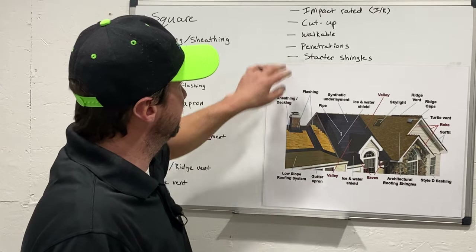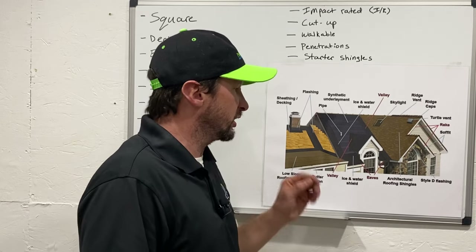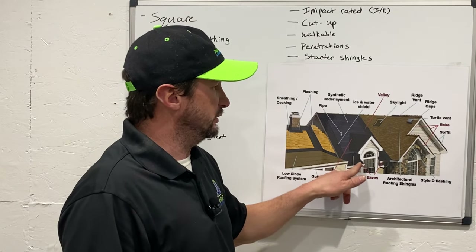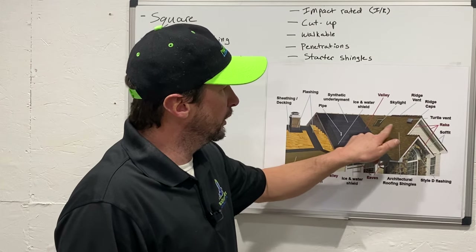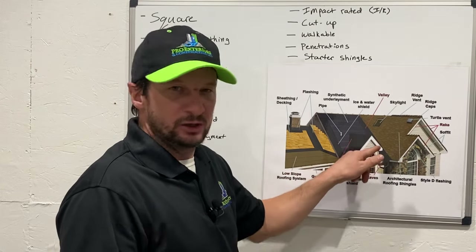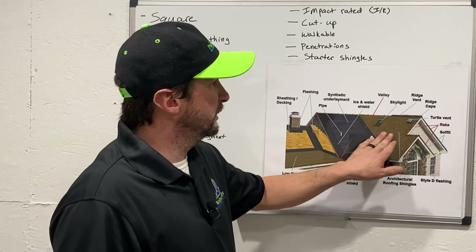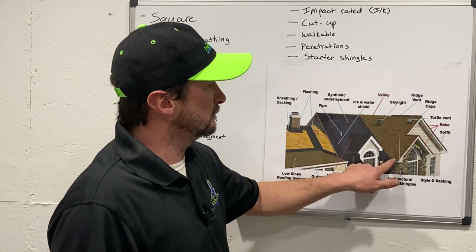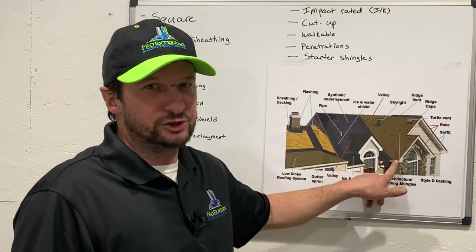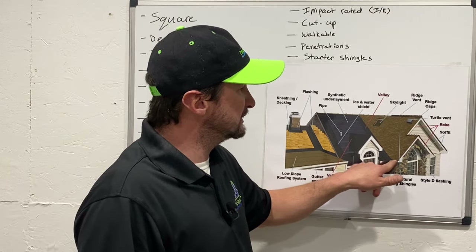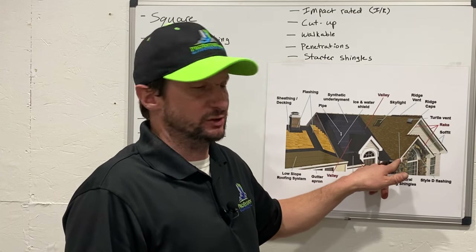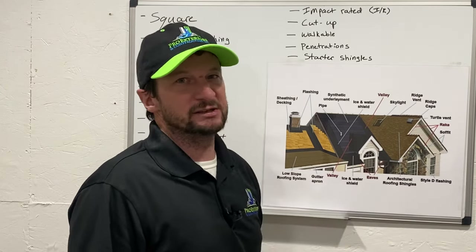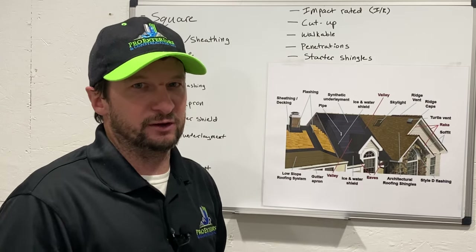The final term is starter shingles. Your starter shingles go along your eave edge. Each course or row of shingles adheres with a little bit of tar to the row below it, all the way down to the bottom. But when you get to the very first row at the bottom, there's nothing for that first shingle to adhere to. That's why we install starter shingles along your eave edges — so that first shingle course has something to stick to and won't blow off in the wind.